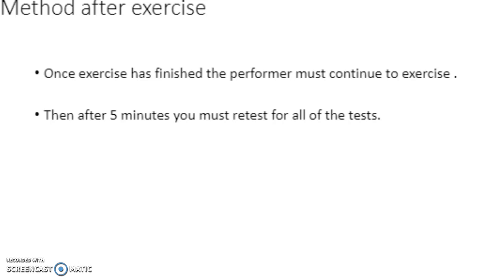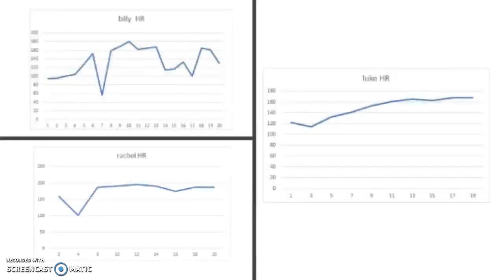Method during exercise: every 2 minutes on the evens we take the heart rate; every 2 minutes on the odds we take the breathing rate; every 4 minutes we take the O2 saturation; and every 5 minutes we take the blood lactate and rate of perceived exertion. Method after exercise: once exercise is finished, the performer must continue to exercise lightly. Then after 5 minutes, retest for all of the measurements.